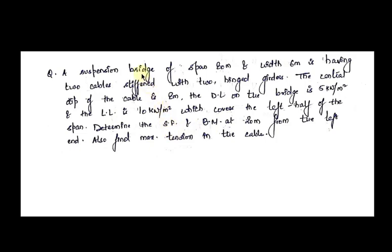In the question we are given that the span of the two-hinged girder is 80 meters and the width of the girder is 6 meters. By width we mean the width of the girder on which the traffic will move — that is, the total width of the road is 6 meters. It is also given that the bridge has two cables. If you see Laxman Jhula in Rishikesh, that suspension bridge also has two cables at the two ends of the deck. So in this question also it has two cables and it is stiffened with a two-hinged girder.